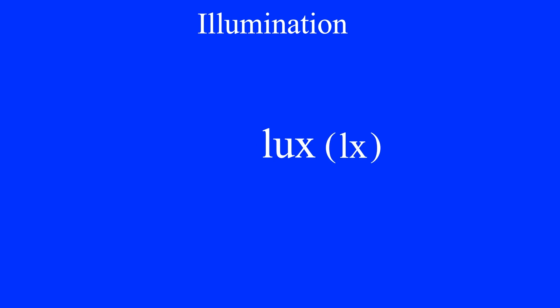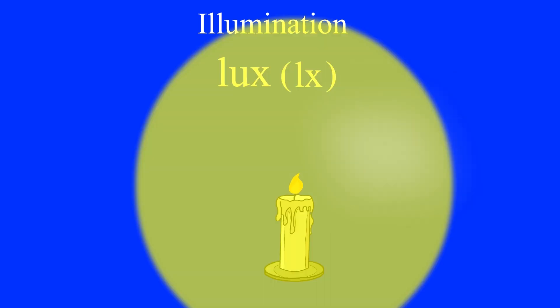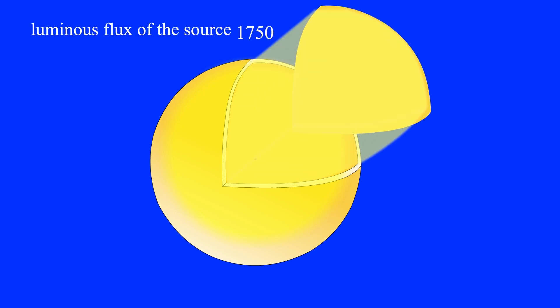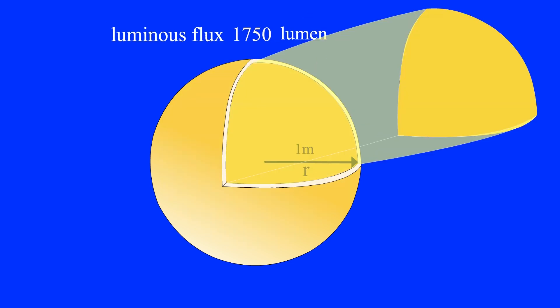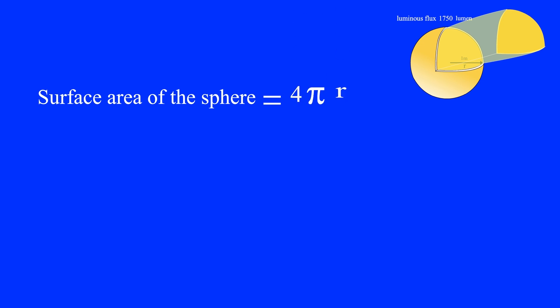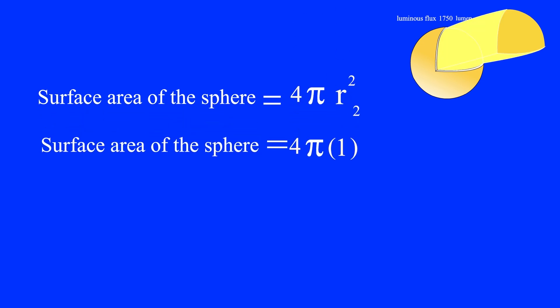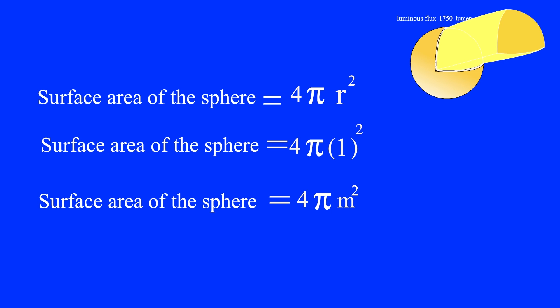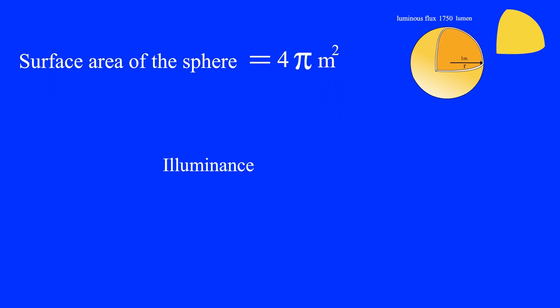To clarify, we will place a point light source inside a sphere. If the luminous flux of the source is one thousand seven hundred and fifty lumens, how much illumination will the inner surface of the sphere receive if the radius of the sphere is one meter? To find the illumination of the inner surface, we must first calculate the surface area of the sphere using the equation 4πr², giving us a surface area of 4π square meters.